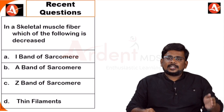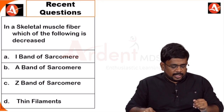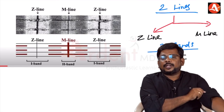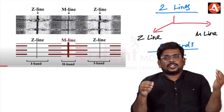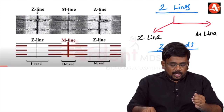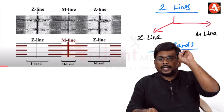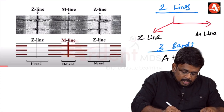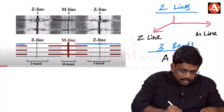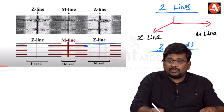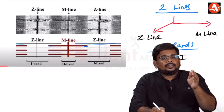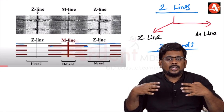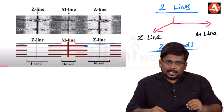Another muscle physiology question from the same exam: in skeletal muscle, there are two types of filaments — actin (thin filament) and myosin (thick filament). You also need to know two lines and three bands. During contraction, actin and myosin overlap each other.